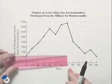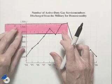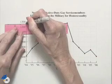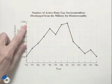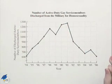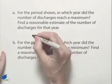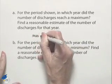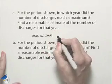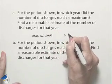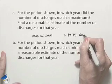I'm going to use a ruler. I'm going to head up to that point and kind of work my way over. I can see that it's approximately right here, which looks to me very close to three quarters of the way. So the maximum occurred in the year 2001, and the maximum value was approximately 1,275 discharges.